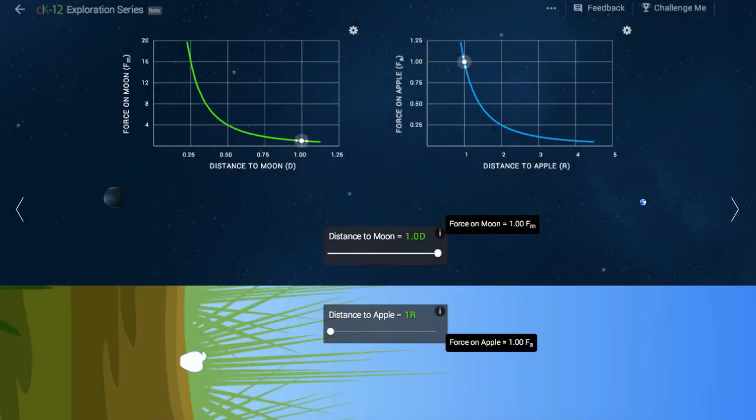Before Isaac Newton's work in the 17th century, little was understood about the nature of gravity. All we really knew was that gravity pulls things to the ground when we drop them. It wasn't understood at that time that the moon orbits the earth due to the same pull of gravity as an apple experiences on the earth's surface.